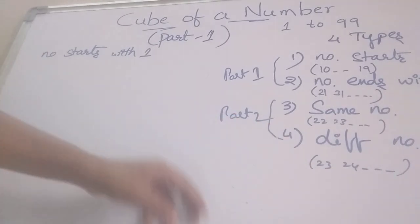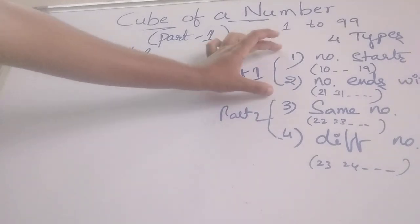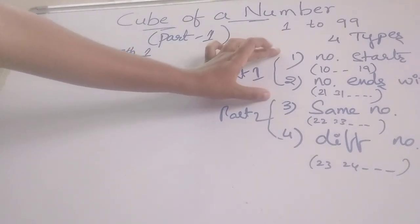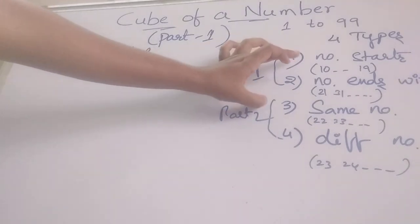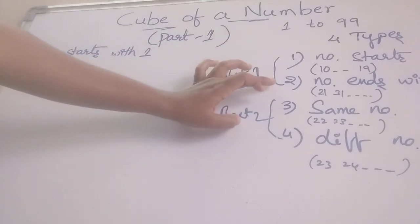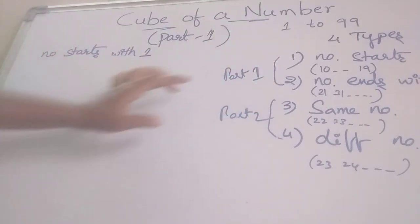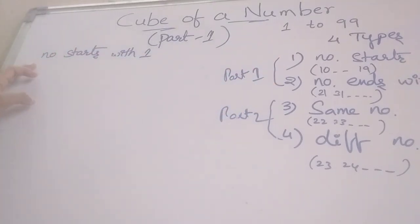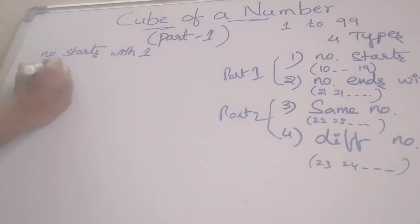In this part 1 video we are discussing two cases: number starts with 1 and number ends with 1. First, we can discuss the number starts with 1. In this case we are finding the cube of 13.